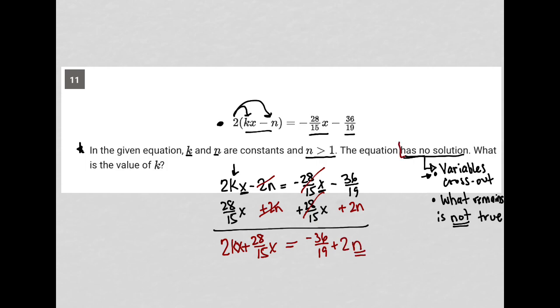So here's how I utilize my knowledge of what it means that the equation has no solution. I'm going to force these things to happen. So first of all I'm going to force the variables to cross out. How do I do that?